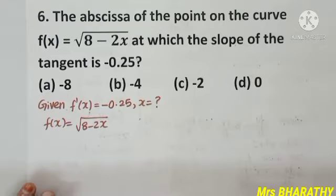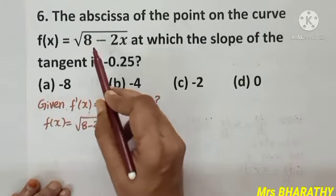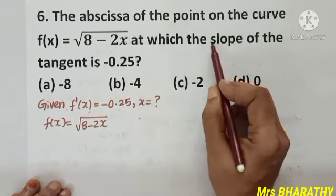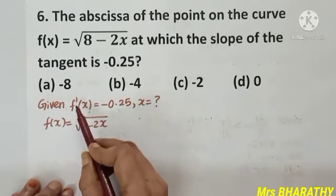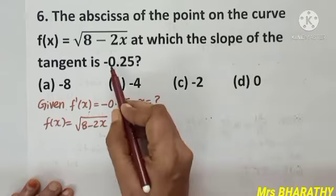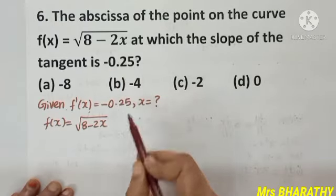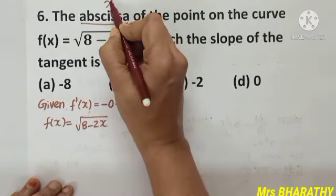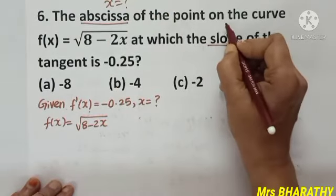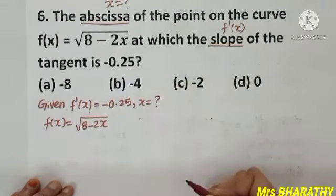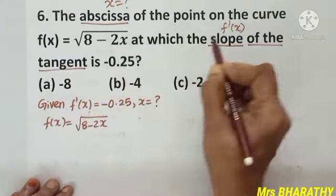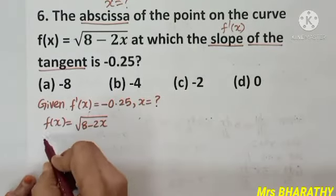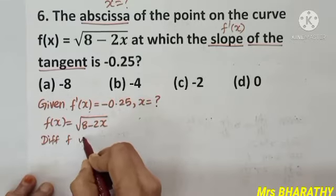The abscissa of the point on the curve f(x) = √(8 − 2x) at which the slope of the tangent is −0.25. Whenever they give slope of the tangent, it is f′(x). We need to find the value of x. So f′(x) = −0.25. Let us differentiate f(x) with respect to x.